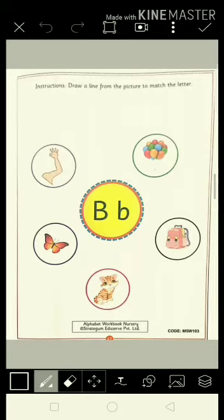Today we are going to solve page number 47 of the alphabet workbook. The instructions for this page are: draw a line from the picture to match the letter. What we have to do is first look at the picture, identify the object, and then if it starts with letter B, we are going to match it with letter B in the yellow circle.